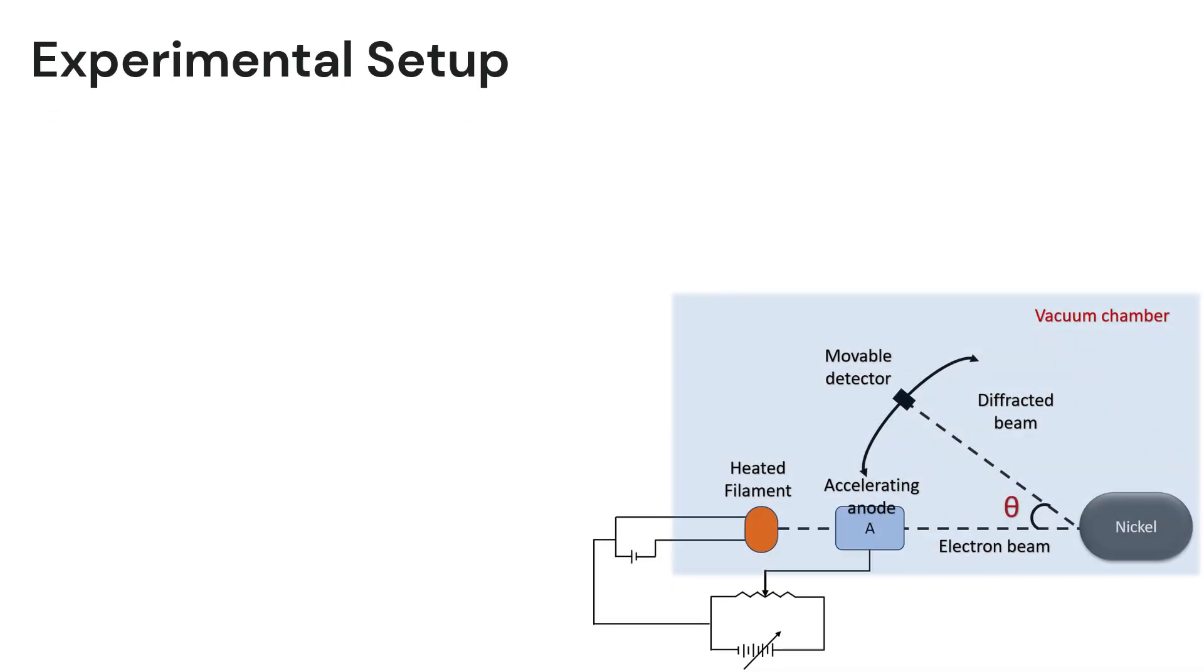For that purpose, they used this experimental setup. In this experimental setup, there is a vacuum chamber. A vacuum tube with nickel crystal is used in this experiment. The entire setup is enclosed in a vacuum chamber to prevent electrons from scattering off air molecules.